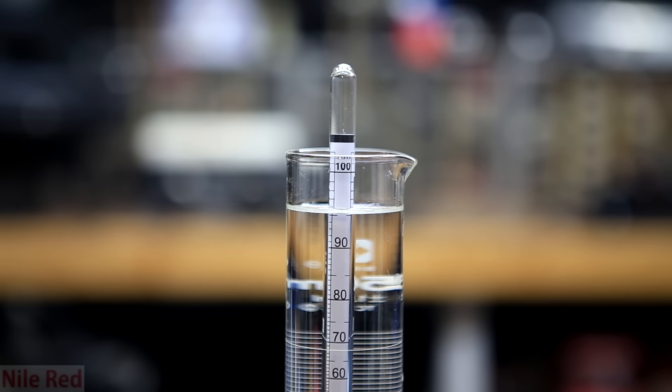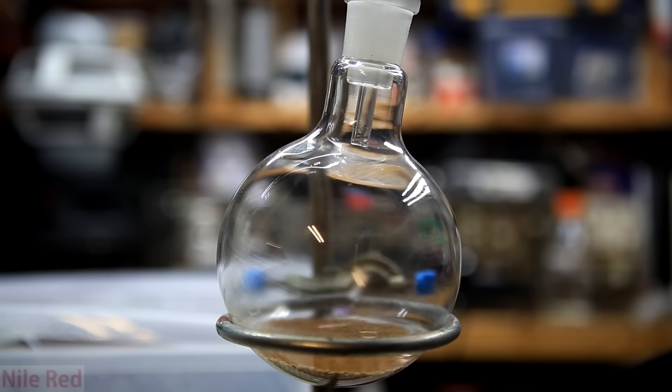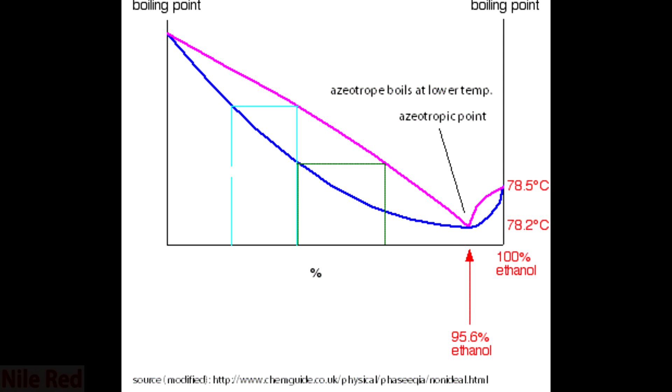Water and ethanol form what's known as an azeotrope. This occurs when a mixture of liquids has a higher or lower boiling point than each of the individual components. In the case of ethanol, a mixture of 95% ethanol to water boils at a lower temperature than pure ethanol.